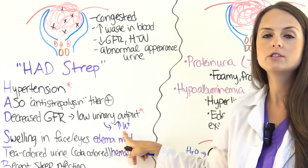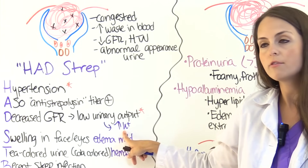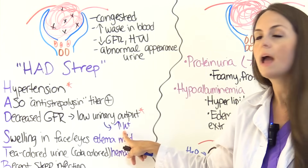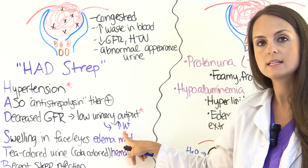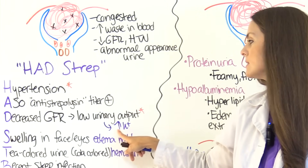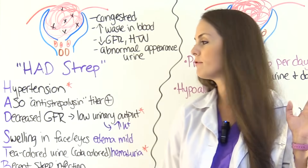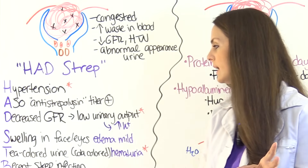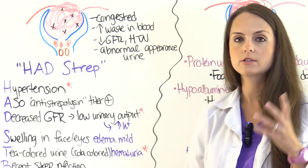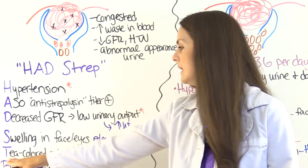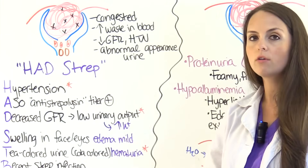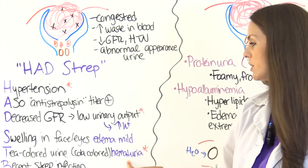As a nurse, you really want to monitor the potassium level because the body is not able to excrete potassium normally, and it can build up causing hyperkalemia. S is for swelling in the face and eyes — the edema tends to be a bit more mild than compared to nephrotic syndrome, and it can be worse in the morning, especially in the face. T is for tea-colored urine — that cola-colored urine — because of hematuria.